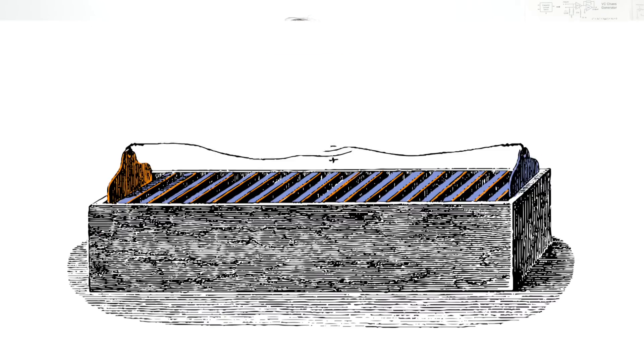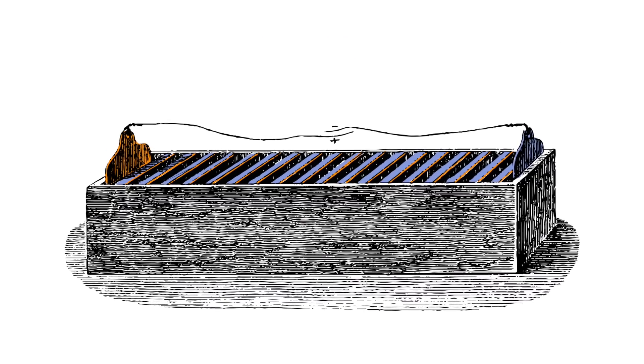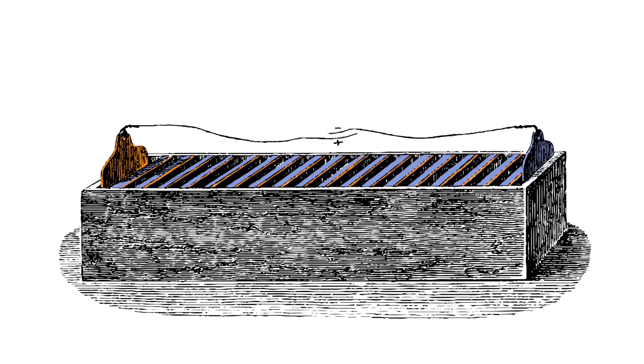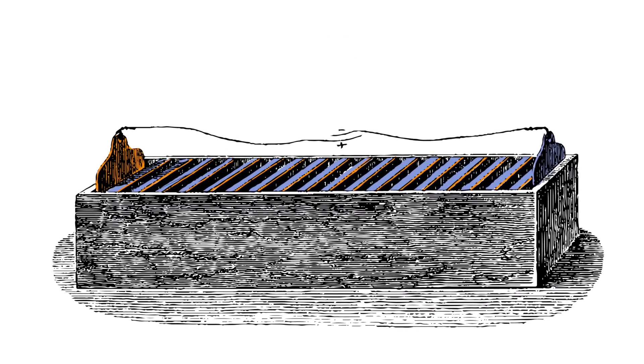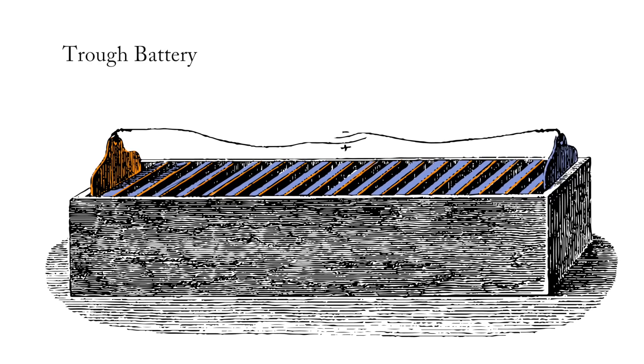Not long after the voltaic pile was created, William Cruikshank came along and improved the design by laying it on its side in a slotted box. This helped prevent the electrolyte from leaking and causing shorts between plates, and it was known, appropriately enough, as a trough battery.